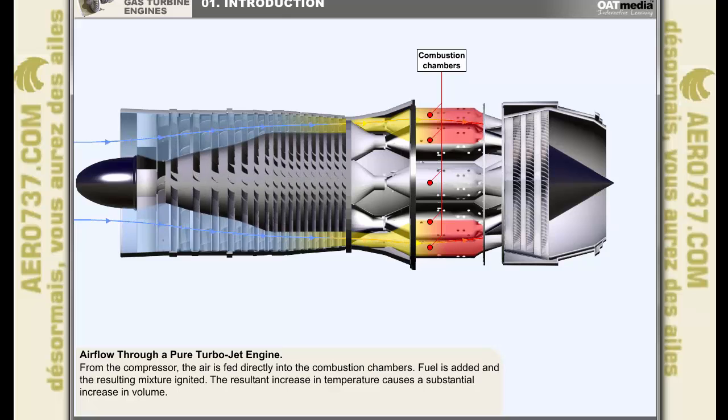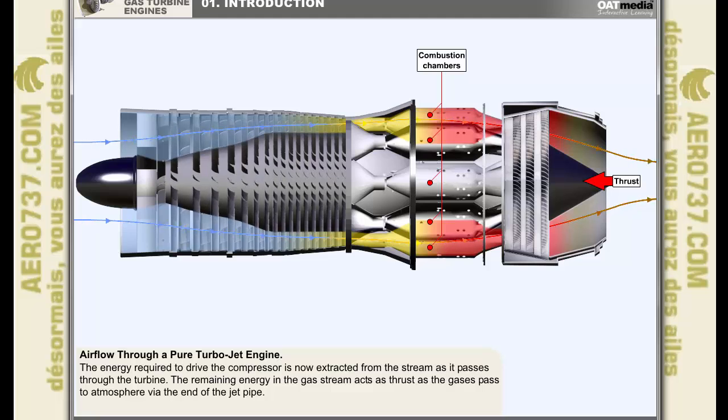As it flows from the compressor, the air is fed directly into the combustion chambers, and fuel is added and the resulting mixture ignited. The resultant increase in temperature will cause the substantial increase in volume which is required. The energy required to drive the compressor, approximately 50% of the energy in the gas stream, is now extracted from the stream as it passes through the turbine. The remaining energy in the gas stream acts as thrust as the gases pass to atmosphere via the end of the jet pipe.